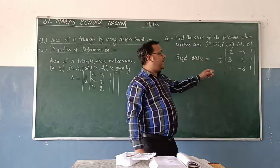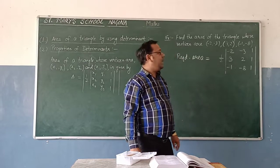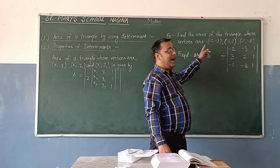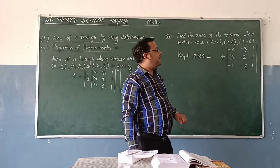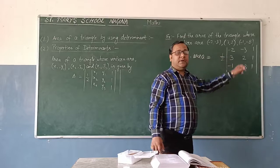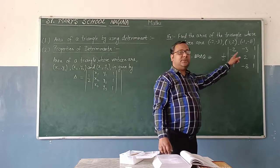first column will be made by the x-coordinates of the vertices. Second column will be made by the y-coordinates of the vertices. And third column is fixed: 1, 1, 1.